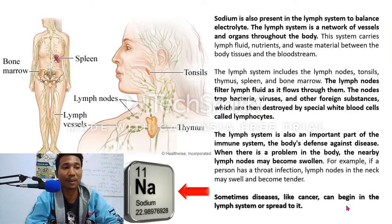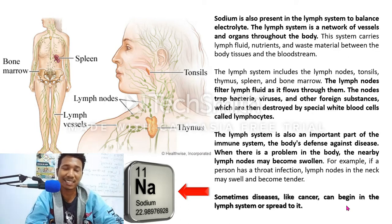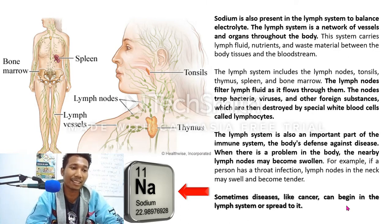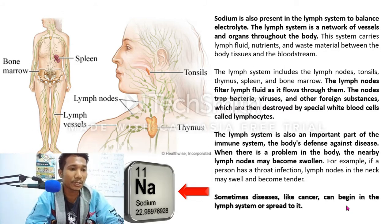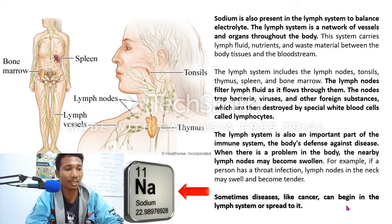Sodium is also present in the lymph system to balance the natural fluid. The lymph system is a network of vessels and organs throughout the body. The system carries lymph fluid, nutrients, and waste material between the body tissues and the bloodstream. The lymph system includes the lymph nodes, tonsils, thymus, spleen, and bone marrow.